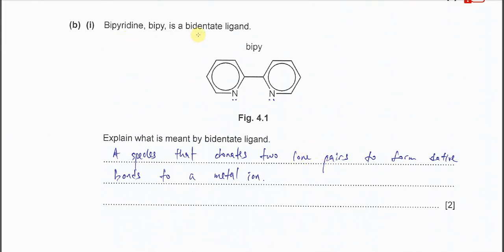Bipyridine is a bidentate ligand. Explain what is meant by bidentate ligand. It is a species that donates two lone pairs to form dative bonds with the metal cation. Since bipyridine is a bidentate ligand, it must have two donor atoms — the two nitrogen atoms. Each nitrogen has a lone pair, and these lone pairs donate to the metal cation to form two dative bonds.